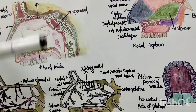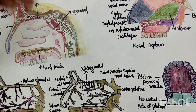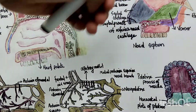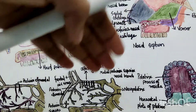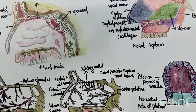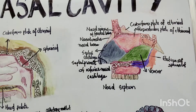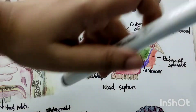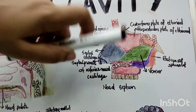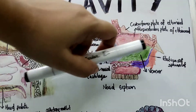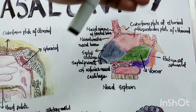We will discuss the lateral wall in detail in another section. Today we will discuss the nasal septum, that is the medial wall of the nose. The nasal septum divides the nose into right and left halves. The nasal septum is an osteocartilaginous structure — it has a bony part and a cartilaginous part, shown here in different colors for clarity.